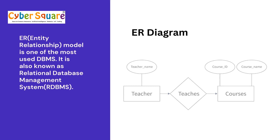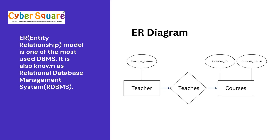Entity Relationship is one of the most used DBMS models. In the ER model, data is stored in tables, also known as relations. Tables contain rows and columns. Data is viewed as entities, attributes, and different relations that can be defined between entities.